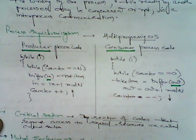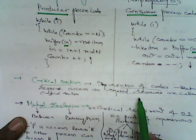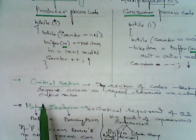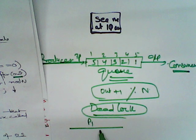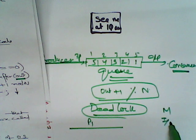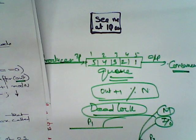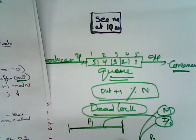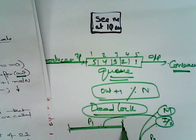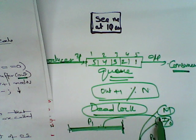The next point of discussion is about critical section. Critical section means the section of code that requires access to shared resources is called the critical section. For example, process P1 is running and occupying a resource — memory, input/output. The next process P2 wants to access the same resource, but it is already occupied by P1. Under a critical region, the section of code that requires access to this resource is called the critical section. After the critical section ends, the next process will be able to carry on.